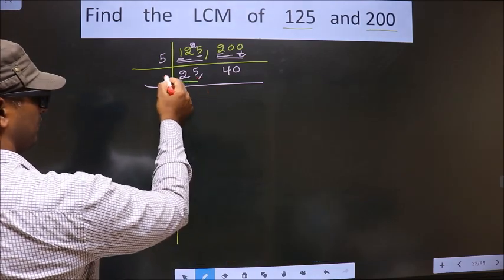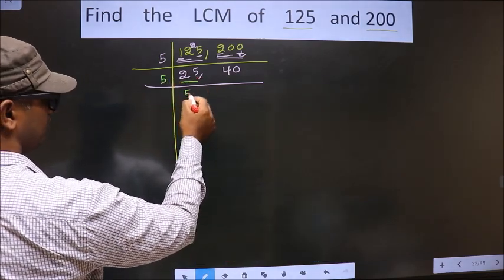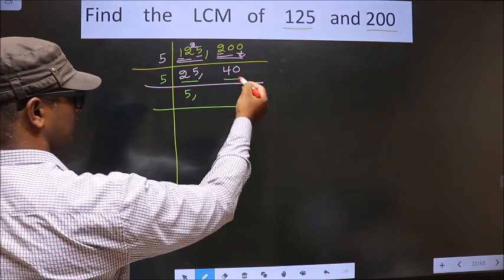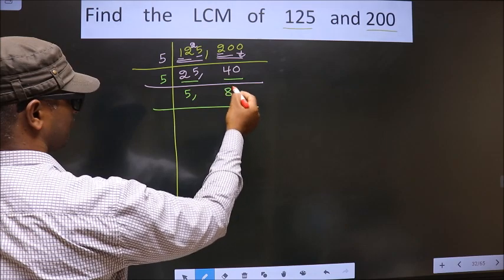Now here we have 25. 25 is nothing but 5, 5 is 25. The other number is 40. When do we get 40 in 5 table? 5, 8 is 40.